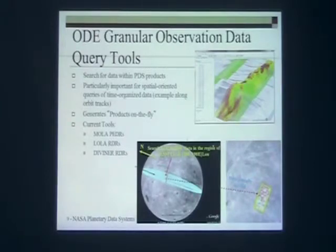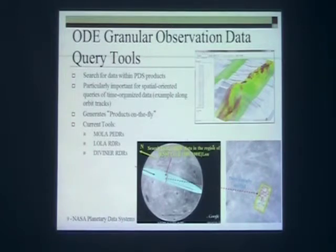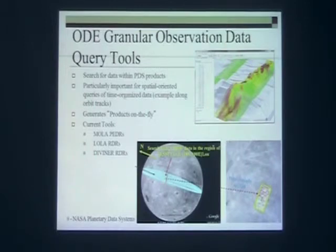I've been talking about searching at the product level — PDS products. We also provide tools, in some cases, for searching at the actual data level, the granular data level. This is really important when you have products organized along a time sequence. Here's an example: LOLA, the laser altimeter on the Lunar Reconnaissance Orbiter, organizes its data in a time sequence of shots on the ground. If you're a scientist who only wants to study a small area of the Moon, you'd have to download hundreds or even thousands of PDS files and dig through them just to find the points in your area. Our granular search tools do this for you — you specify the area and get just those points you want in a variety of formats: ASCII tables, images, or shapefiles for use in GIS. Right now we support MCS, LOLA, and Diviner, and we're going to be expanding that out in the next year or so.